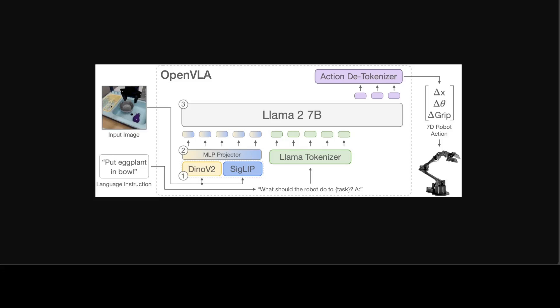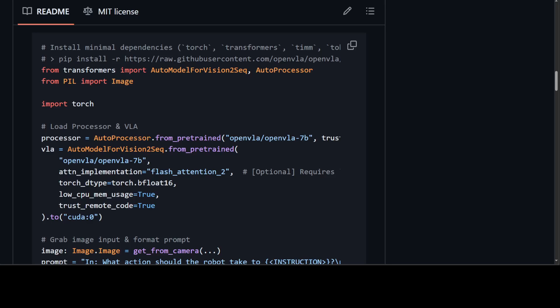That is why this work has explored integrating pre-trained language and vision language models for robotic representation learning and as a component in modular systems for task planning and execution. I believe this is the right step in the right direction. In benchmarking, OpenVLA has outperformed the 55 billion parameter RT-2-X model — the prior state-of-the-art VLA — by 16.5 percent absolute success rate across 29 evaluation tasks on BridgeV2 and Google Robot embodiments.